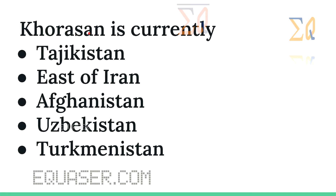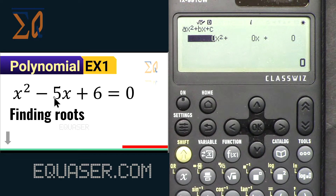Khorasan is currently the region covering Tajikistan, east of Iran, Afghanistan, Uzbekistan, and Turkmenistan. Now let's see how we can solve x² - 5x + 6.